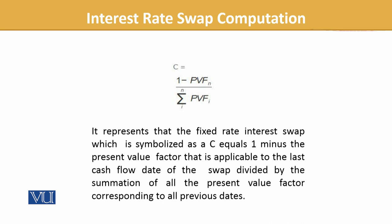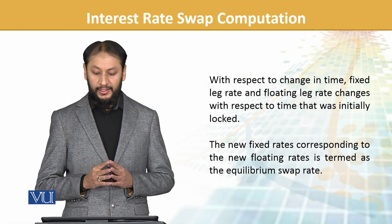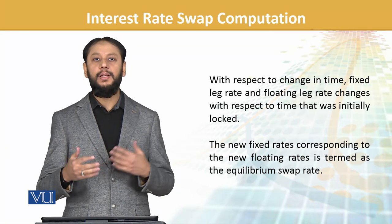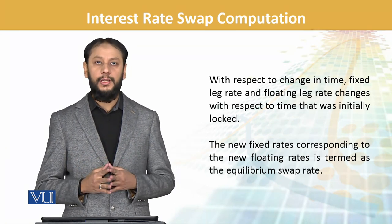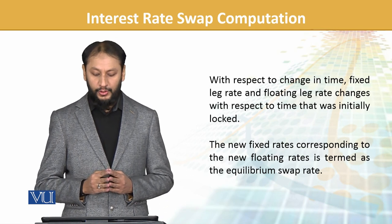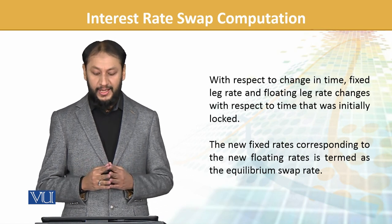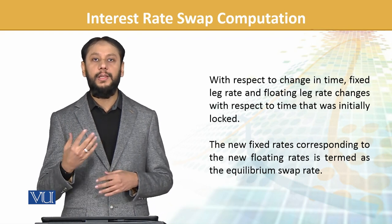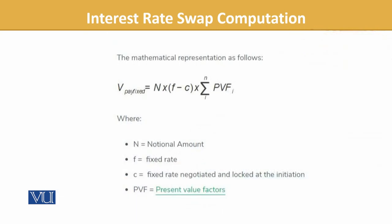With respect to change in time, the fixed leg and floating rate change over time, which are initially locked in. The new fixed rate corresponding to the new floating rate is termed as the equilibrium swap rate. N represents the notional amount on which the swap is working.